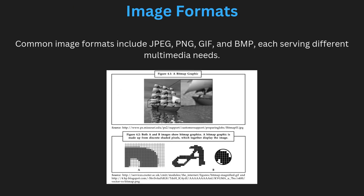First, image formats. Images in multimedia come in various formats, each serving specific needs. Common formats include JPEG, PNG, GIF, and BMP. JPEG is widely used for photos because it balances quality and file size by using compression. PNG supports transparency, making it ideal for web graphics. GIF is used for short animations like stickers. BMP is an uncompressed format that retains high quality but takes up more space. Choosing the right format depends on whether you prioritize image quality, file size, or special features like transparency or animation.